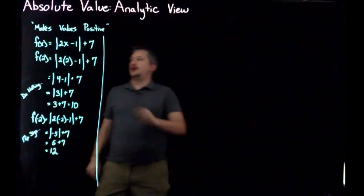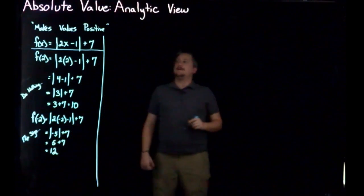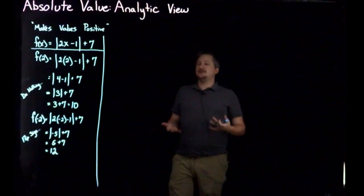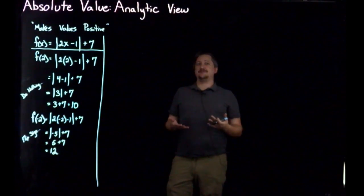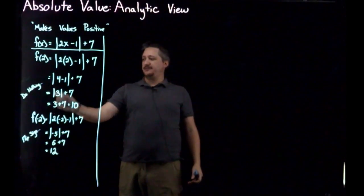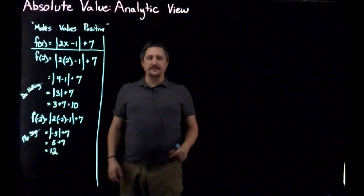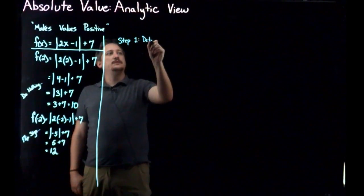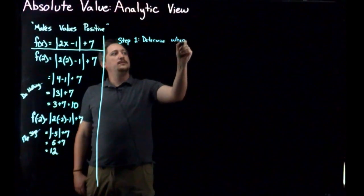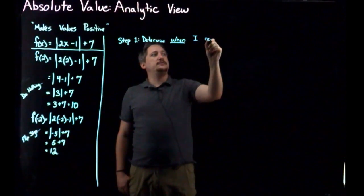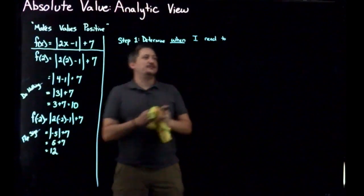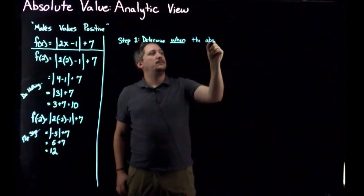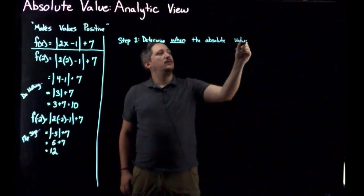Going back to the original equation, in order to represent making things positive under certain circumstances, I need to figure out: when do I get a positive value so the absolute values do nothing, and when do I need to flip the sign? So step one is to determine when the absolute value does something.